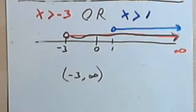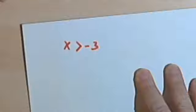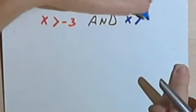Let's look at the same thing with an AND. Okay, so I have x is greater than negative 3, and x is greater than 1.